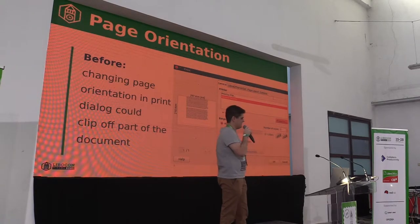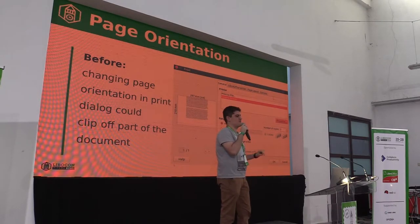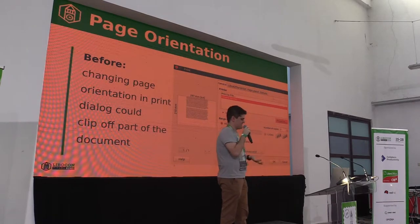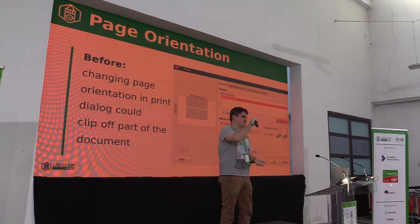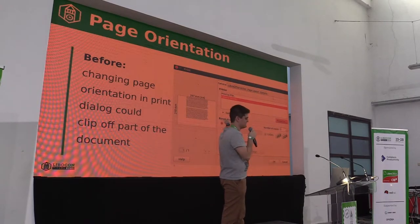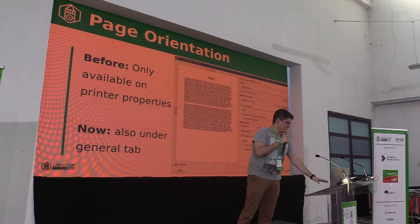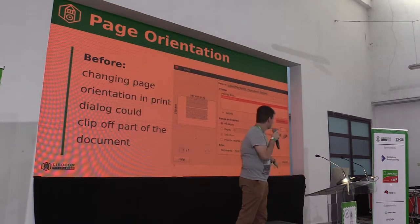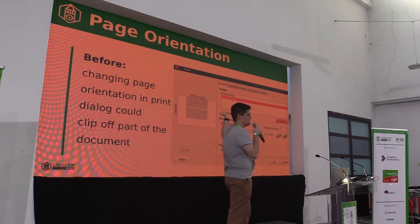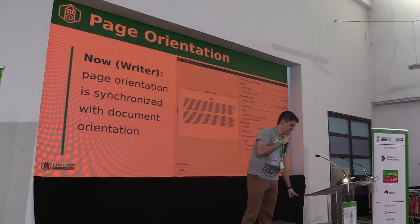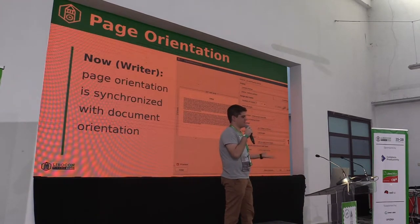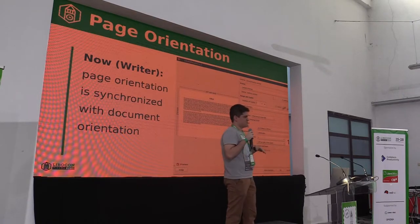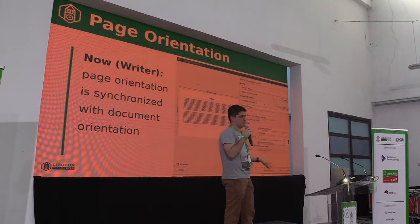Also for page orientation — before, changing page orientation in the print dialogue would cut off part of the document. So if you have a document that is portrait and you say you want to print in landscape, what would happen is the document would remain portrait and the page would just be flipped to landscape, cutting off part of the text. As you can see in this example, before it cut off part of the document and you couldn't see the title anymore. So for Writer, we now synchronize page orientation with document orientation, so changing orientation in the print dialogue also changes the document orientation.